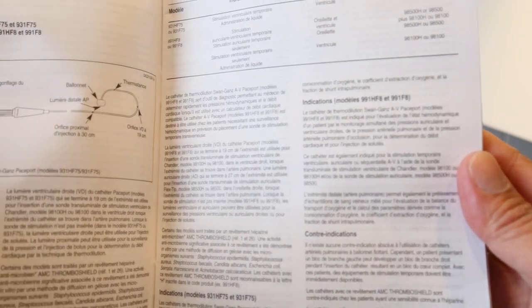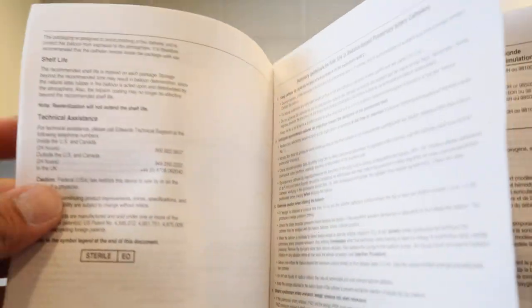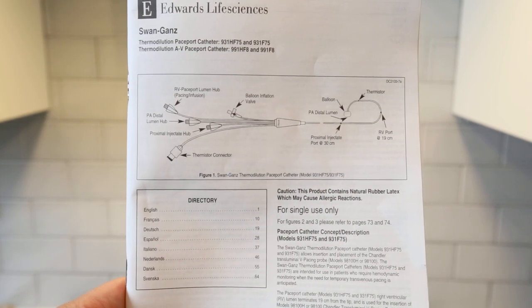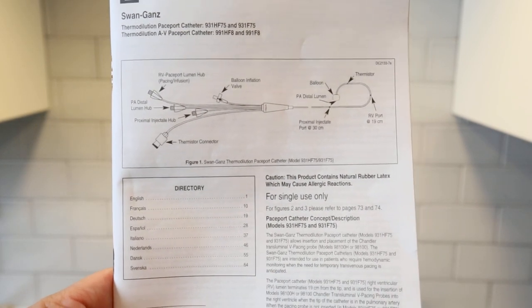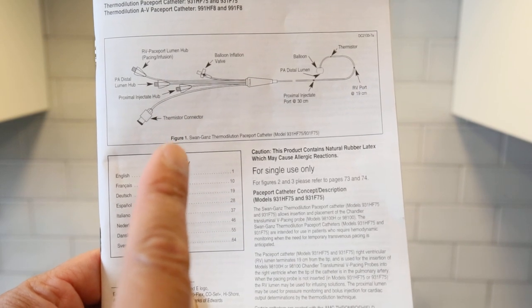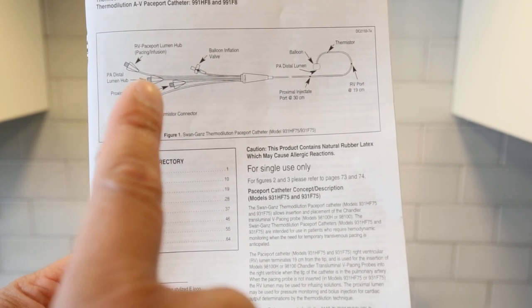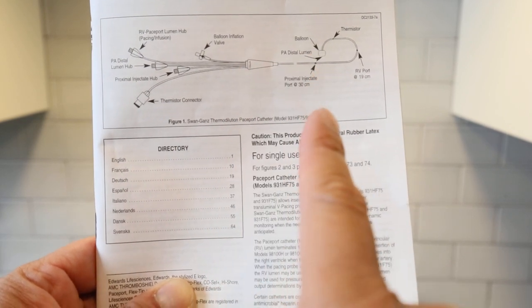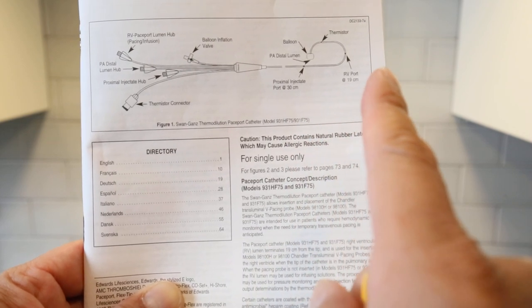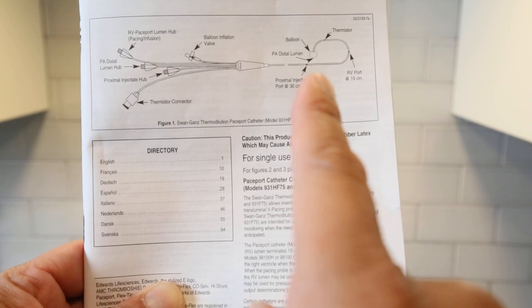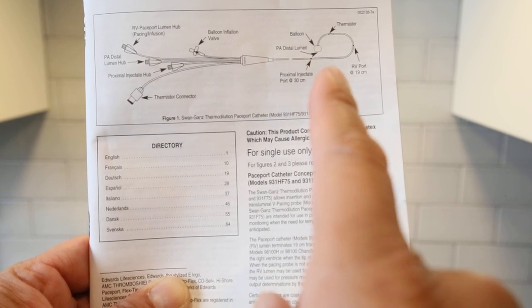So we got your balloon, proximal, thermodilution lumen pacing, and then your thermodilution, which is the longest. The proximal is 30 centimeters out, RV port is 19, and the distal lumen is also of course at the very end.